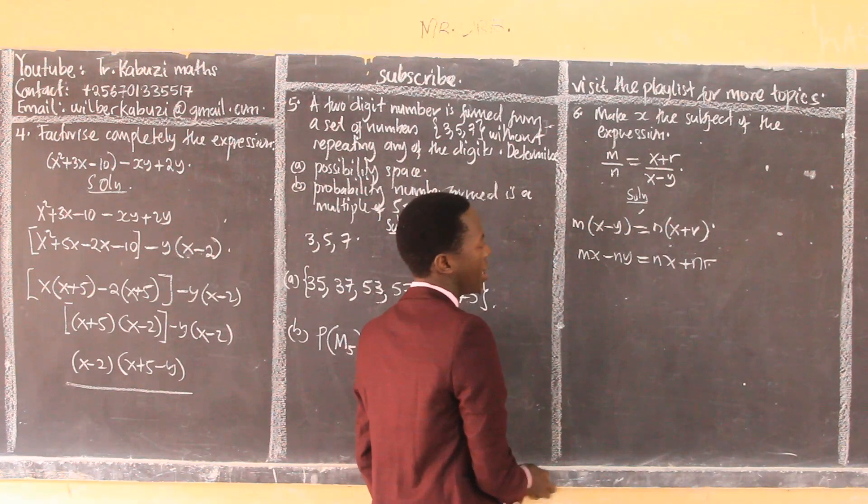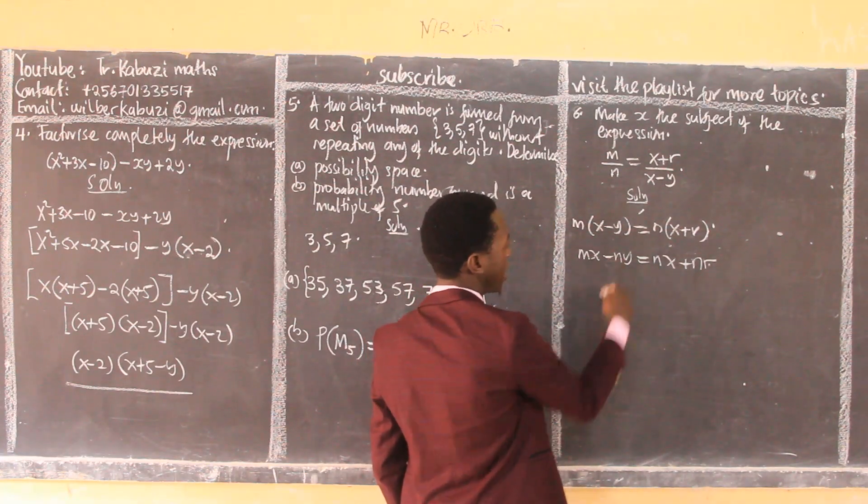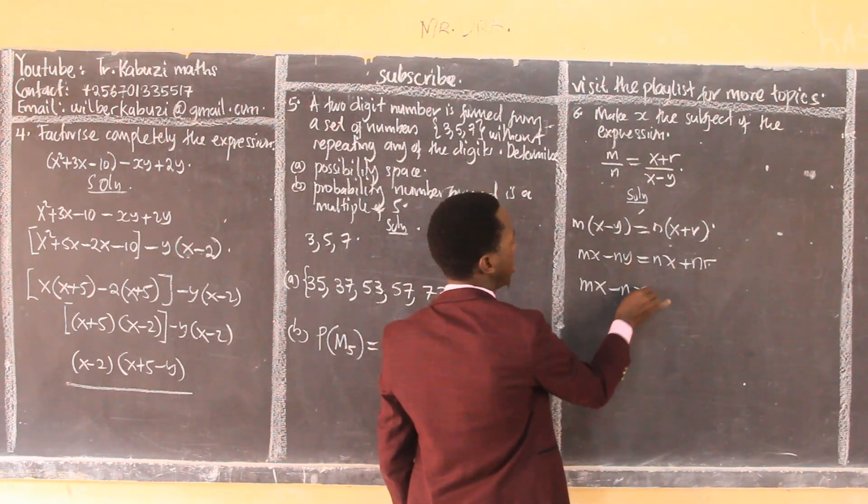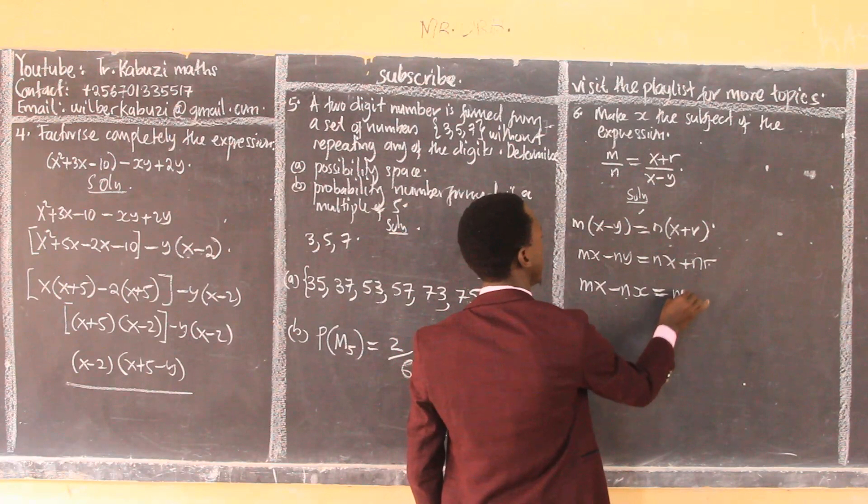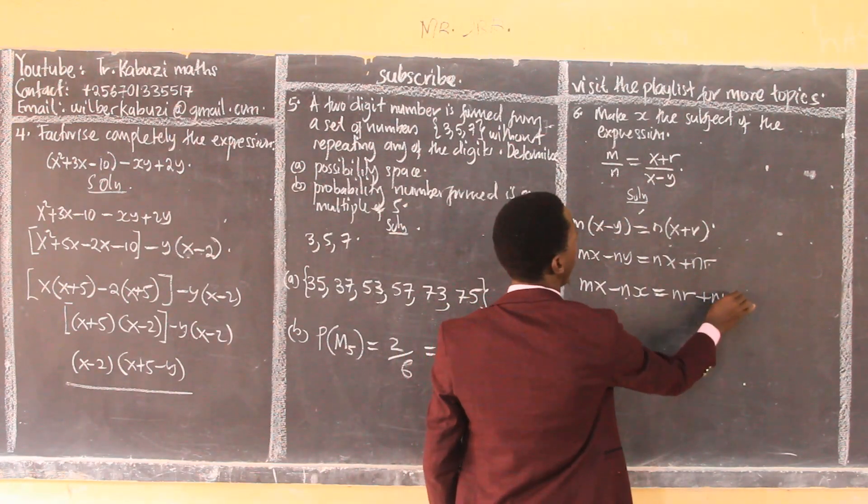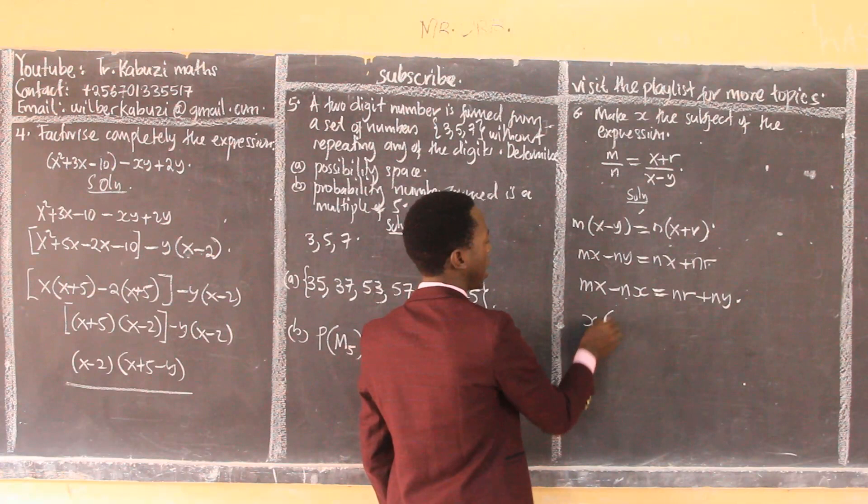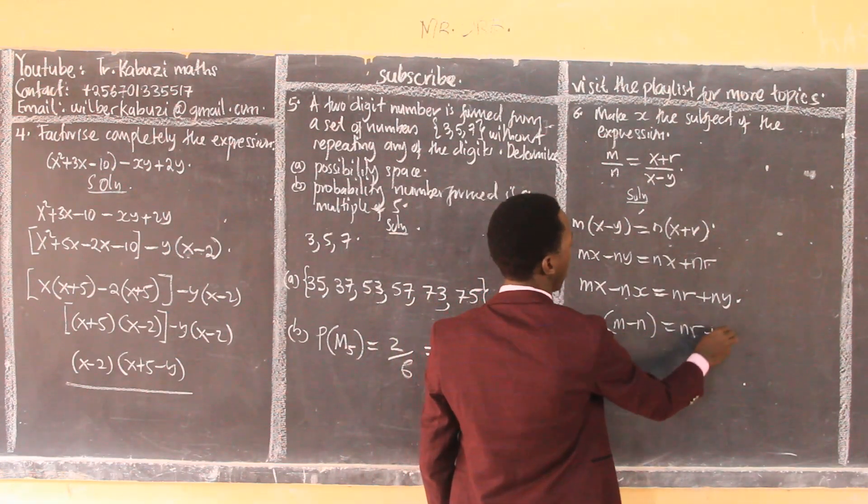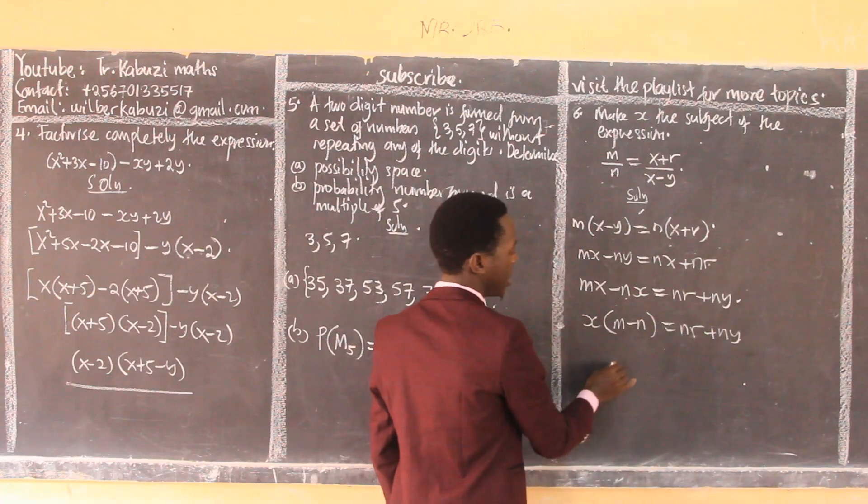...2nx plus 2nr. Then I put all terms with x to one side, then I take this to that side - it changes the sign - equals m minus 2nr. Factor out x to make x the subject.